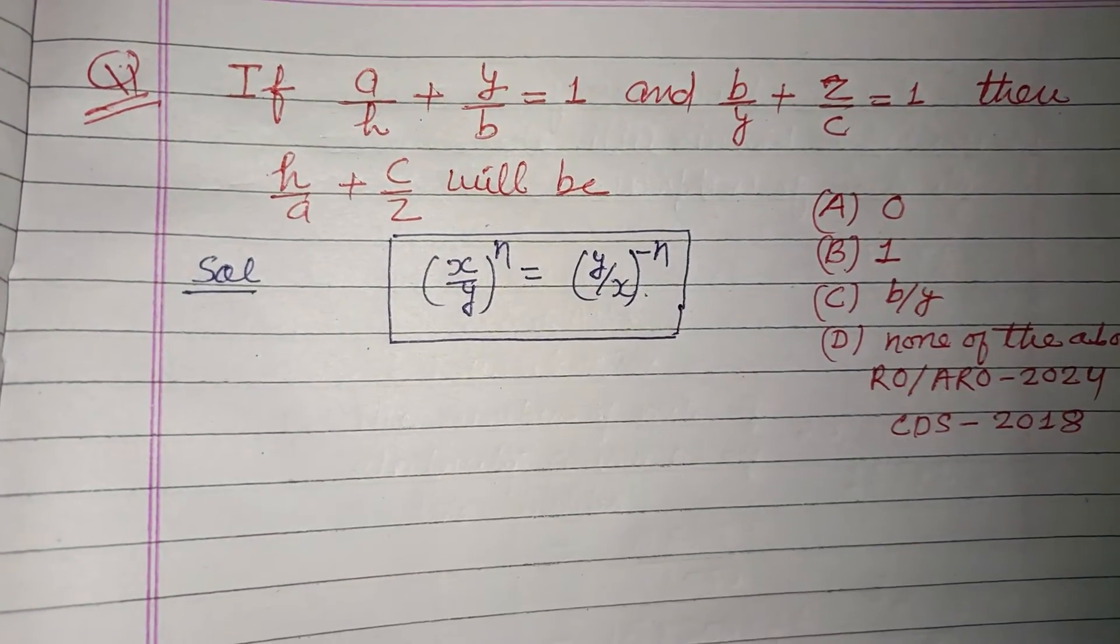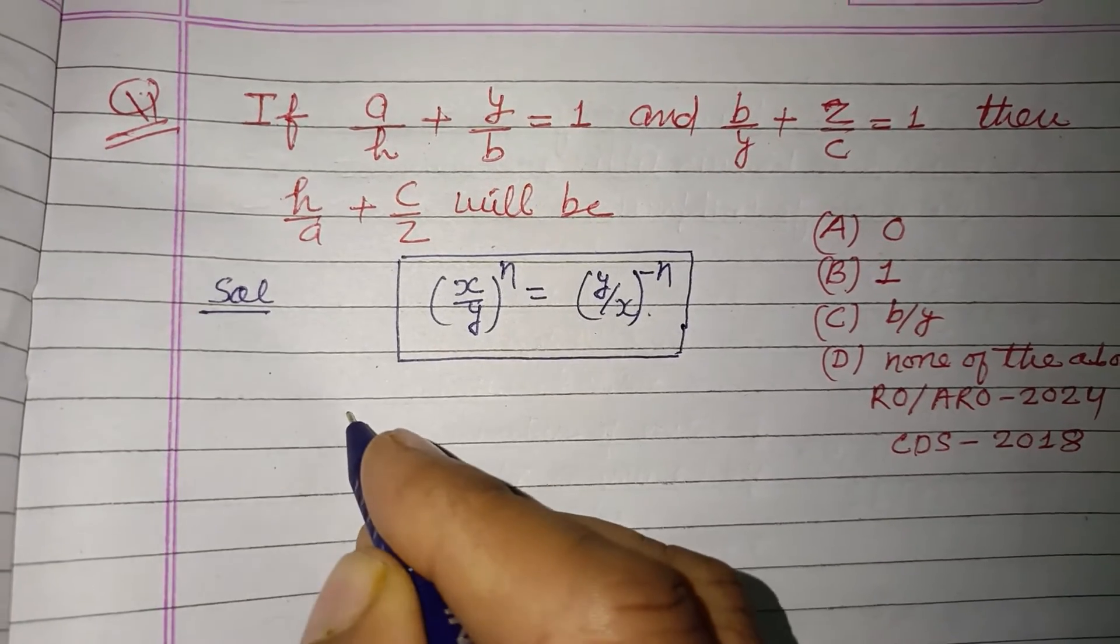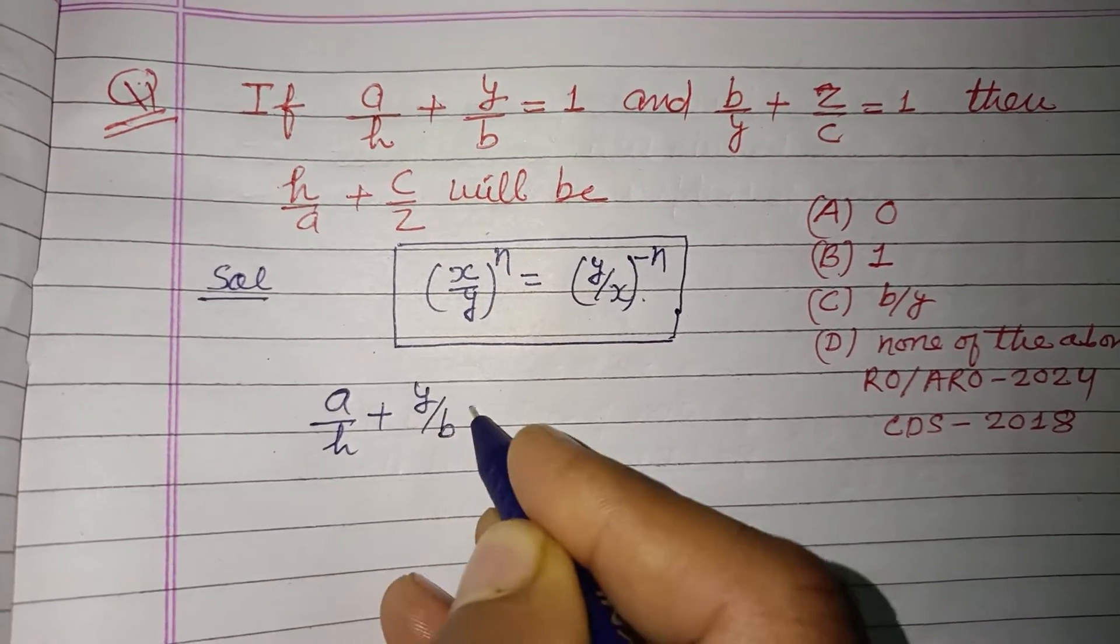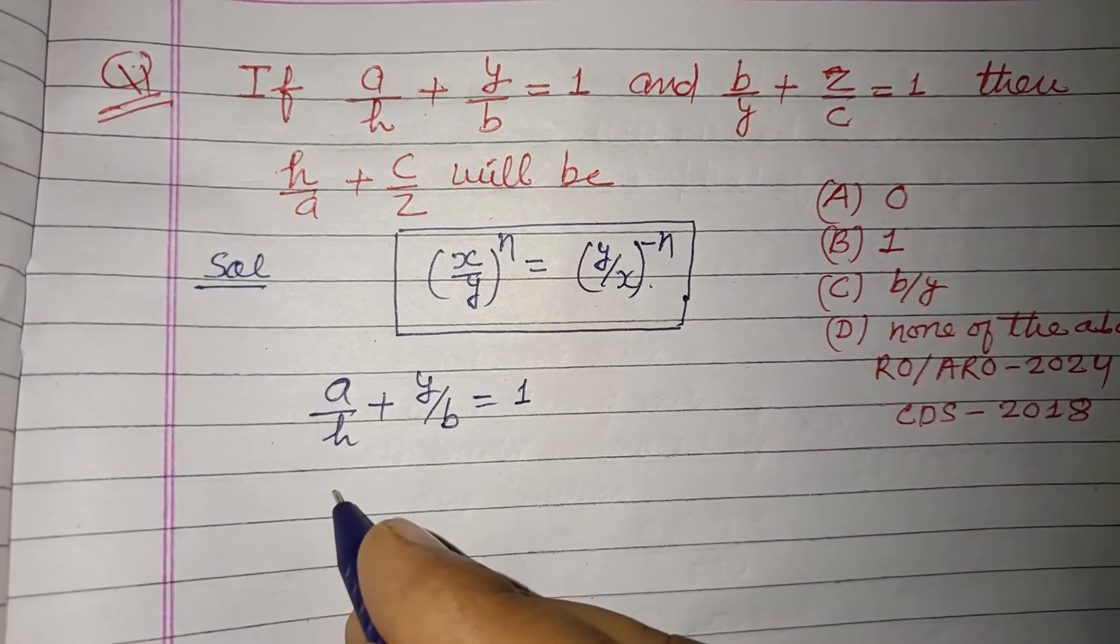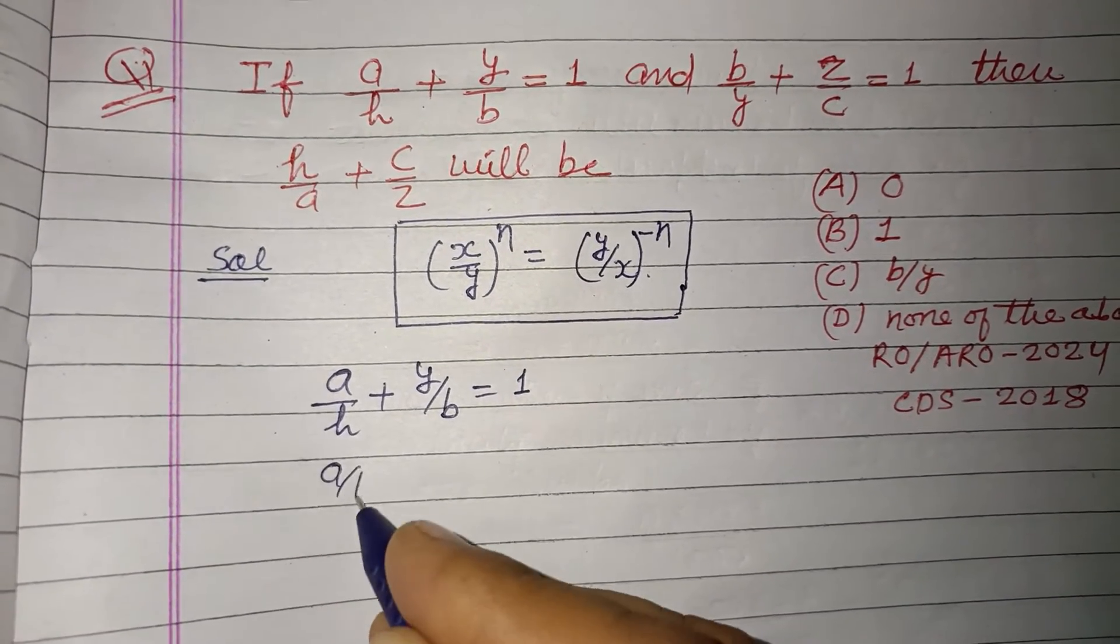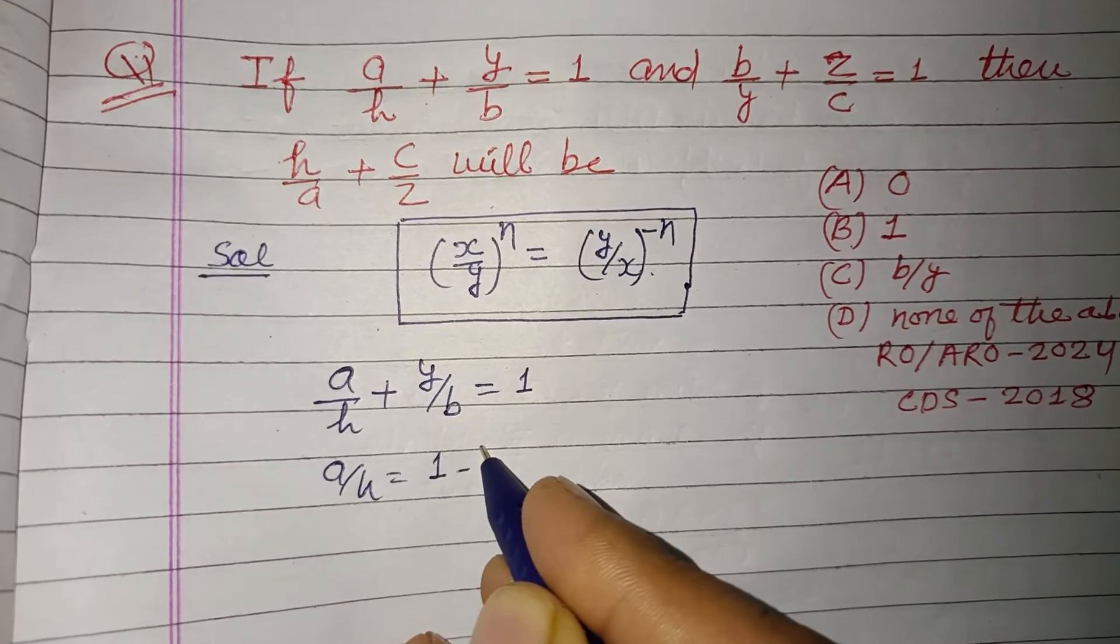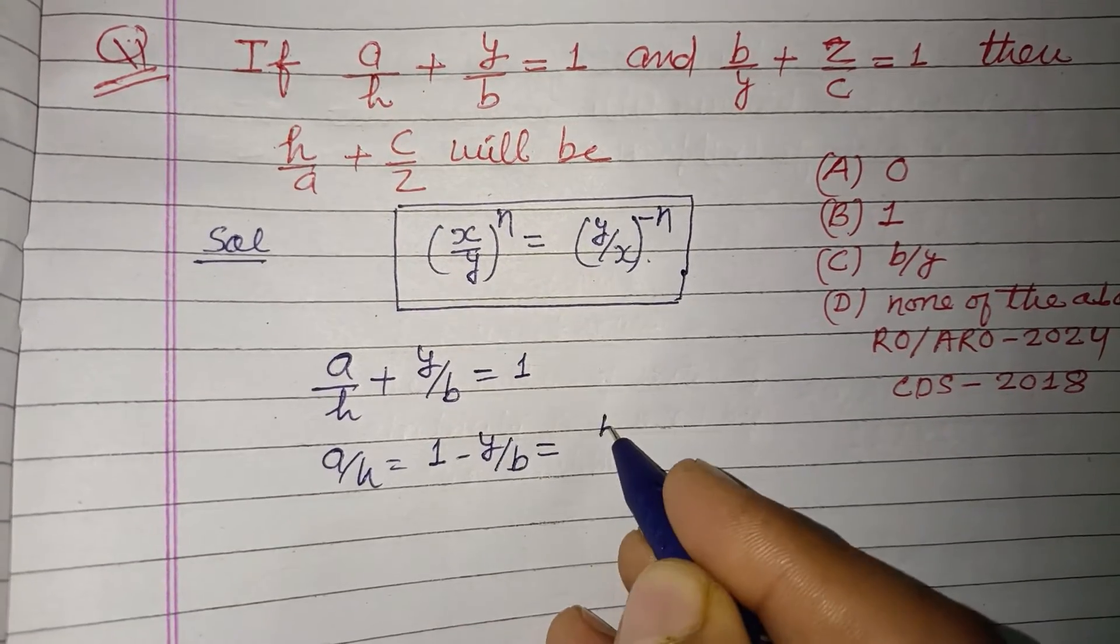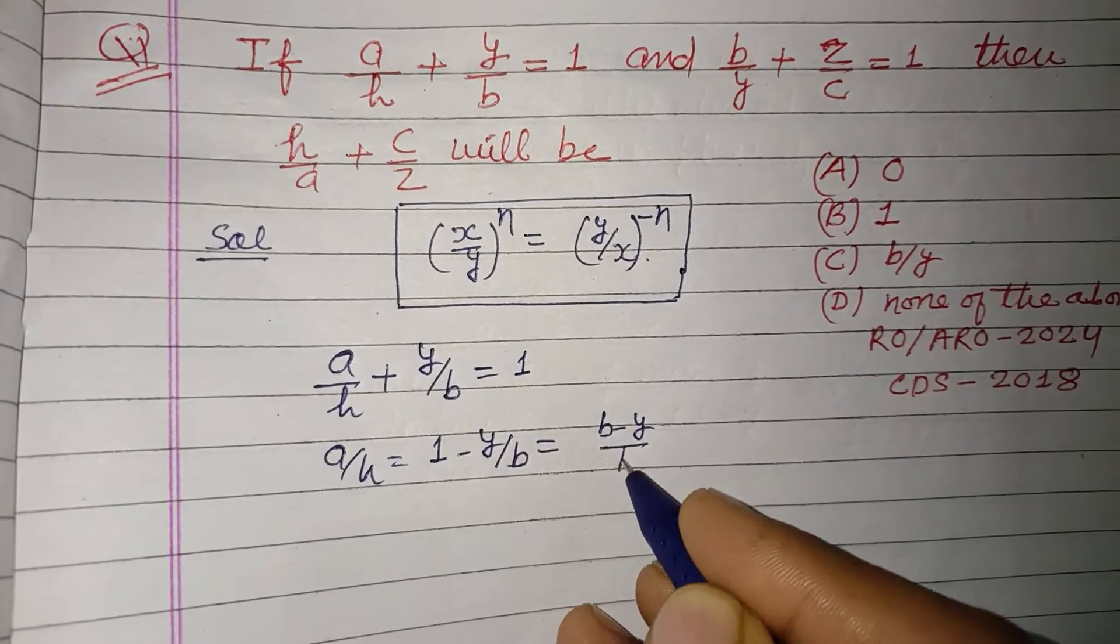Here we have a/h + y/b = 1. So a/h = 1 - y/b, or we write it as (b - y)/b.